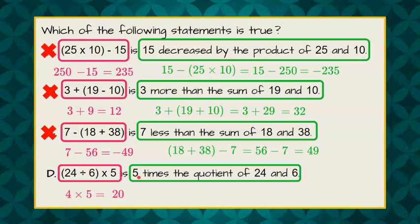Now let's write this numerically. 5 times means 5 multiplied. Quotient means divide. So divide 24 by 6. 24 divided by 6 is 4, and 5 times 4 is 20, and it checks.